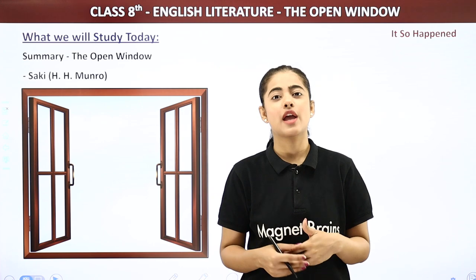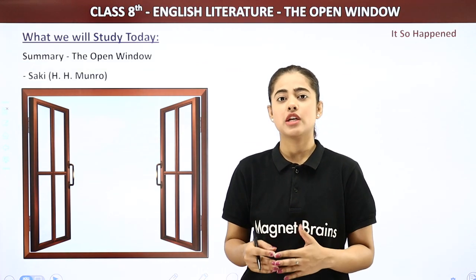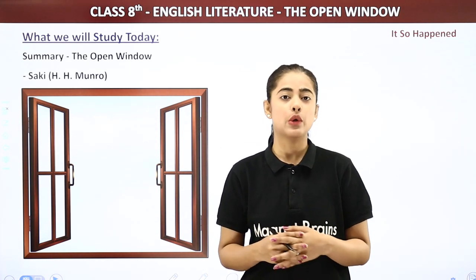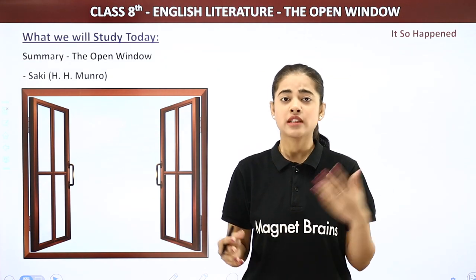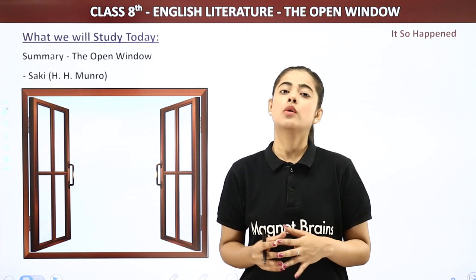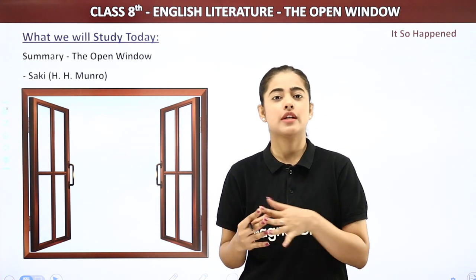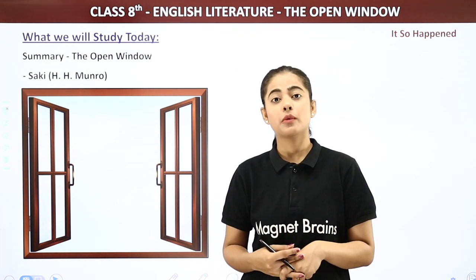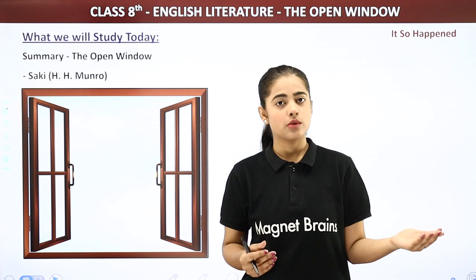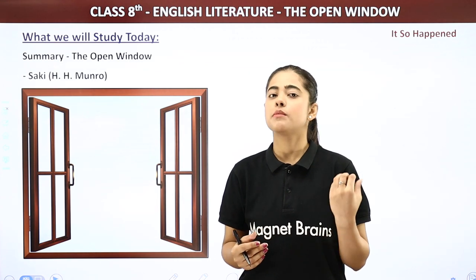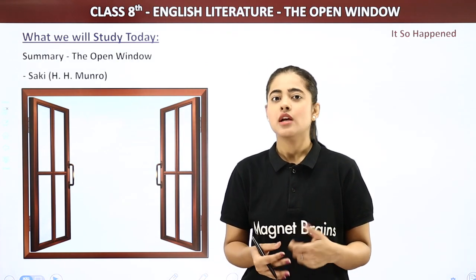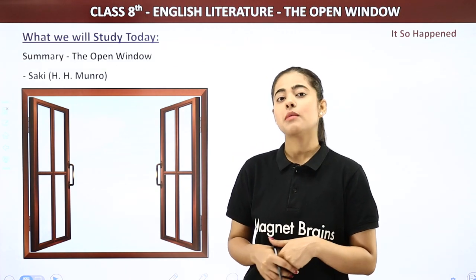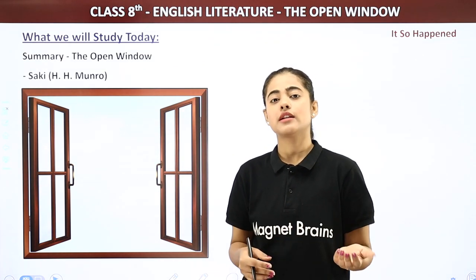Vera entertains Frampton and tells him a story about why the window was kept open even in that season — it was the month of October. Behind keeping it open, there is a tragedy that happened in their house three years ago. She narrates the full story to Frampton. Frampton was a bit scared because it was a rather scary story.